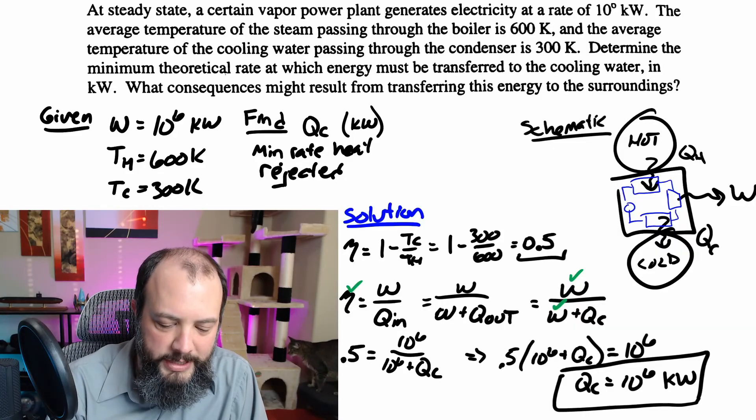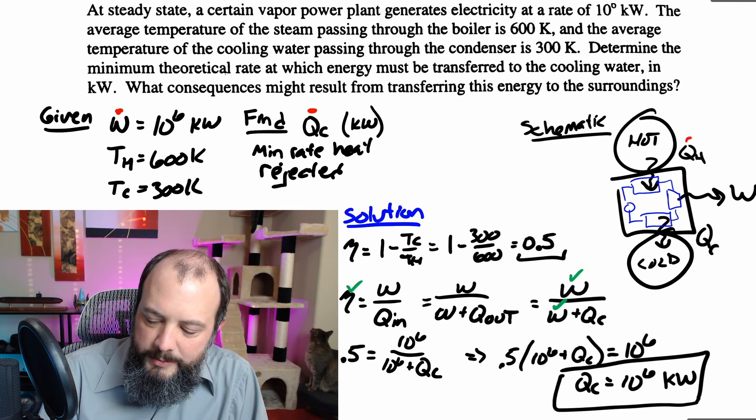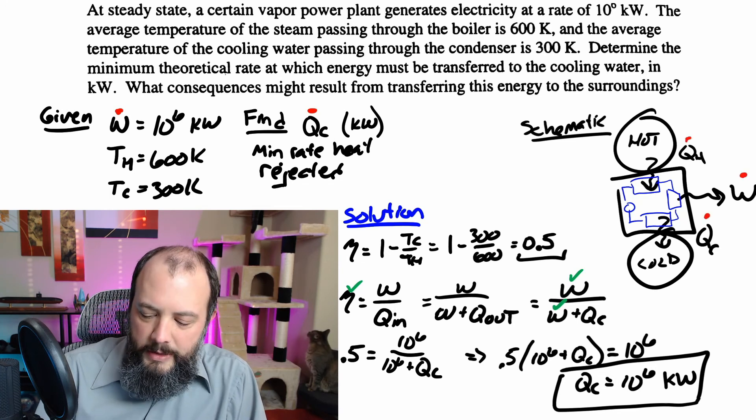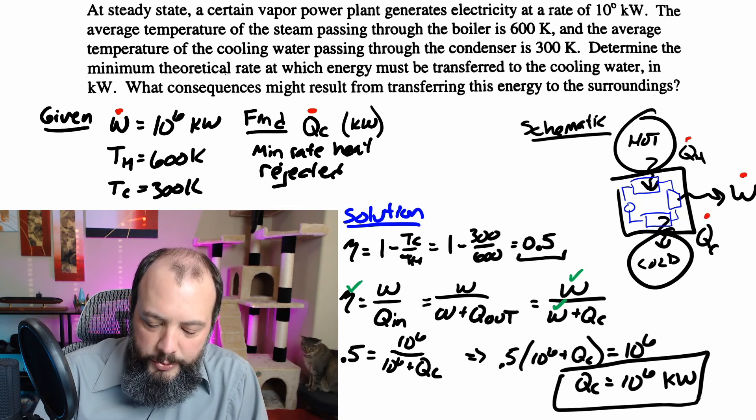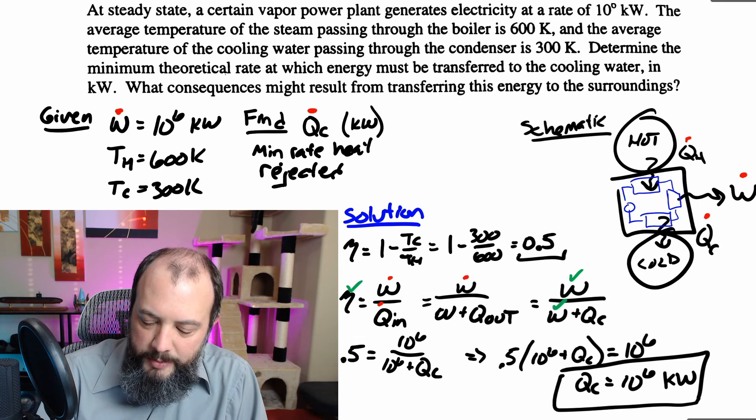All of these Q's and W's that I've written down should all have dots over them. So Q and W just by themselves stand for energy, and those would have units of kilojoules. But when using power, so a kilojoule per second or kilowatts, these should all be W_dot and Q_dot.